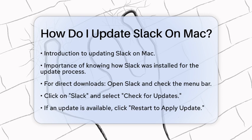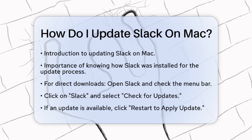If you downloaded Slack directly from the Slack website, start by opening the Slack app on your Mac. Look at the menu bar at the top of your screen and click on Slack. From the drop-down menu, select Check for Updates.